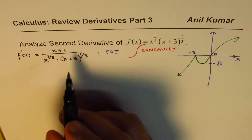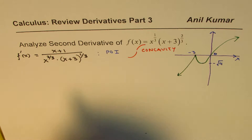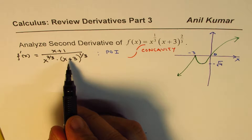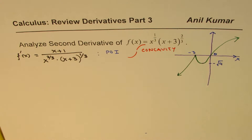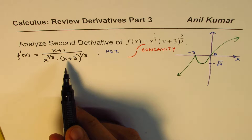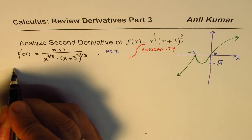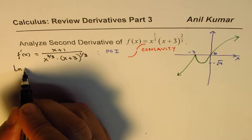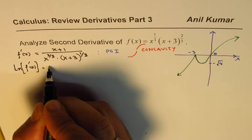Now let's find the derivative of this particular function. As you can see, it's quite a difficult function to differentiate and simplify. You could always use the quotient rule, but what I will do here is use logarithmic differentiation. I will take the natural log of both sides, so I can write the left side as ln of f′(x).